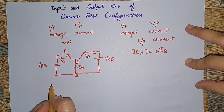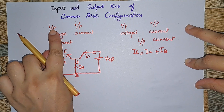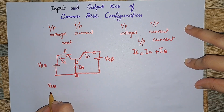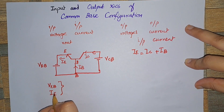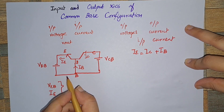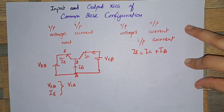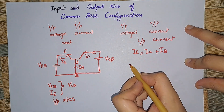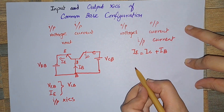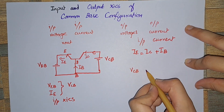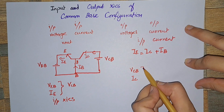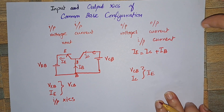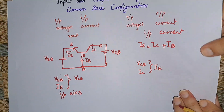So on the input side, for plotting the input characteristics, we need the input voltage which is VEB and the input current which is IE, and I will plot a graph between these two parameters for the different values of the output voltage VCB. Similarly, the output characteristics are the plot between the output voltage VCB and the output current IC for the different values of input current IE.